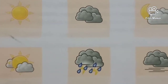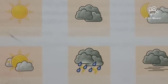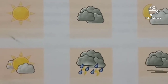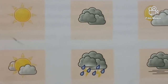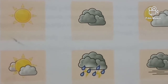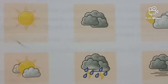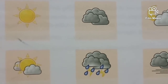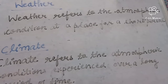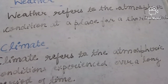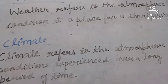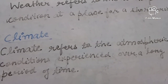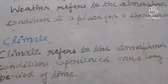A day can have a sunny morning, a cloudy noon, a heavily clouded evening, and a rainy night. So we can say weather is the day-to-day condition of the atmosphere. On the contrary, climate is the average condition of the weather in an area over a long period, say 35 years. Weather refers to the atmospheric conditions at a place for a short period, while climate refers to the atmospheric condition experienced over a long period of time.